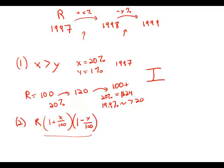Well now between these two brackets, we're going to have to FOIL out. So we get one plus X over 100 minus Y over 100 and then minus XY over 10,000.